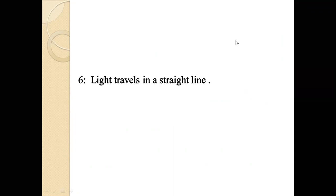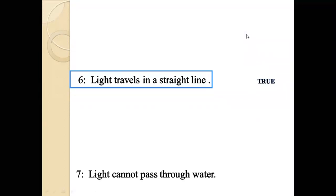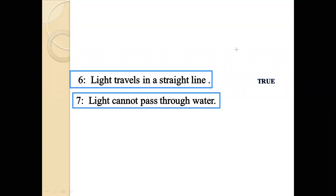Number 6: Light travels in a straight line. This statement is true. Number 7: Light cannot pass through water. This statement is false. The correct statement is: light can pass through water.